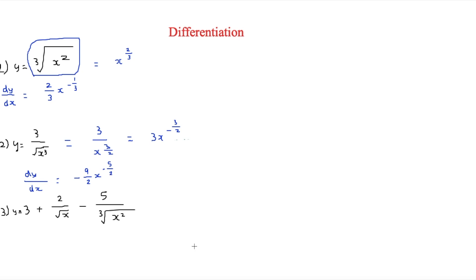For the final question, we have some adding and subtracting with several terms to differentiate. First, rewrite everything. The constant 3 stays as 3. Then 2 over root x is 2 over x to the half, which becomes 2x to the minus half. And 5 over the cube root of x squared can be rewritten as minus 5x to the minus 2 thirds — remembering to make it negative since we've brought it to the top.